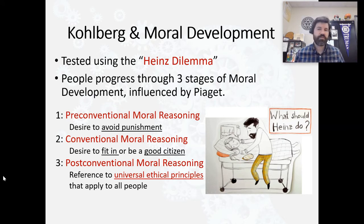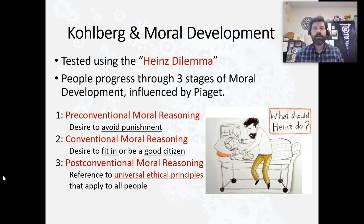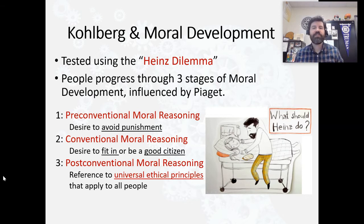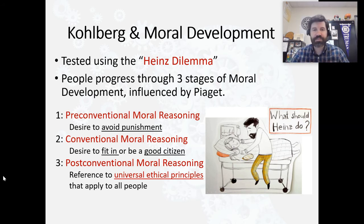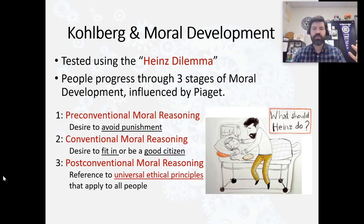Most children fall under what is known as the pre-conventional stage of moral reasoning. In this stage, the justification for behavior is a desire to avoid punishment. We're egocentric in the pre-operational stage of cognitive development — we see the world through our own lens. So if we're thinking about moral development, pre-operational and pre-conventional go together. We're trying to avoid punishment.